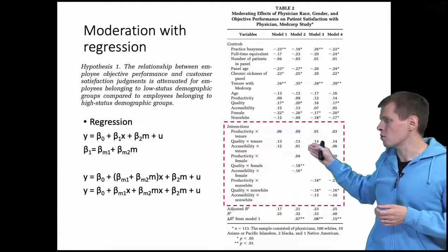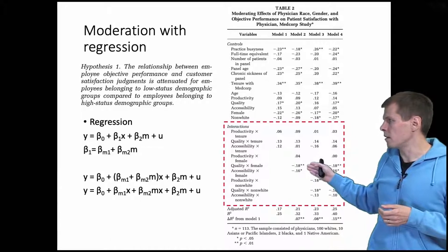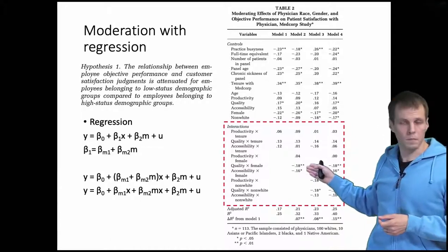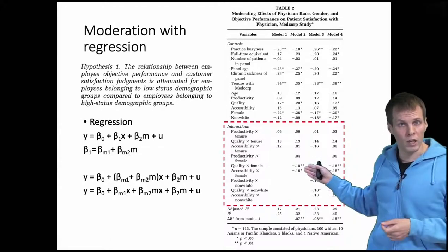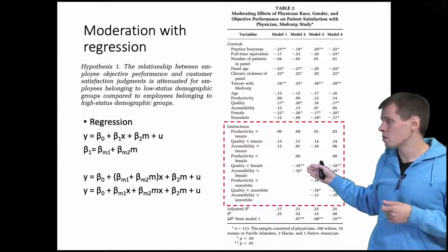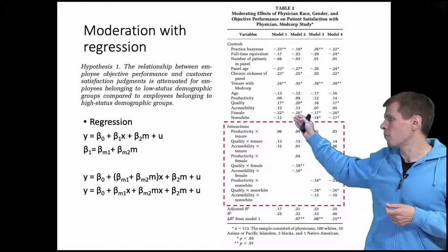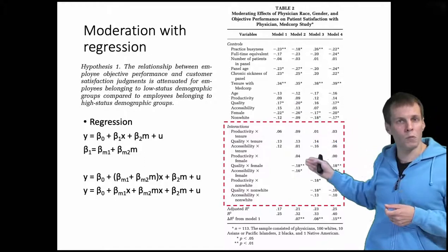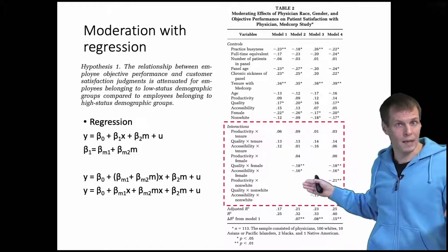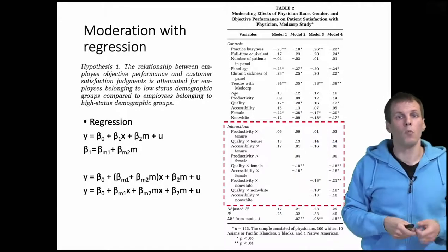And here are the interaction terms. We can see in model two that females are rewarded less for being high quality. So the overall effect of quality is positive, but women are rewarded less than men. So this is how the table would be interpreted.